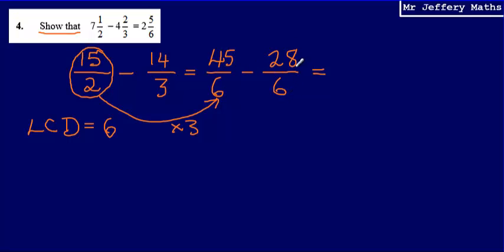And then just subtracting these, that is going to give me 17/6. From there I can then turn this into a mixed number and hopefully it will be the same as 2⅚. So to turn this into a mixed number, how many 6s fit into 17? 2 with a remainder of 5 sixths.